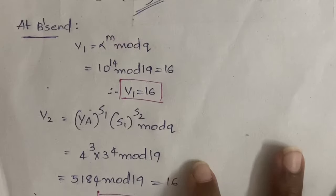At the receiver's end (user B), calculate v1 and v2. v1 = alpha^m mod q = 10^14 mod 19 = 16. v2 = ya^s1 × s1^s2 mod q = 4^3 × 3^4 mod 19 = 16. Since v1 = v2 = 16, the signature is valid. If they were unequal, it would indicate tampering by an attacker.